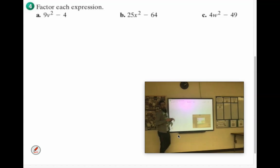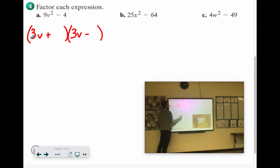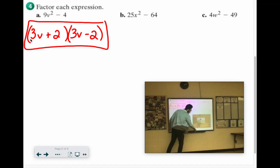Alright, 9b squared minus 4. Can you square root both of them? Yes. Square root of 9b squared is 3b. 3b plus 2, 3b minus 2. It's the difference of squares.